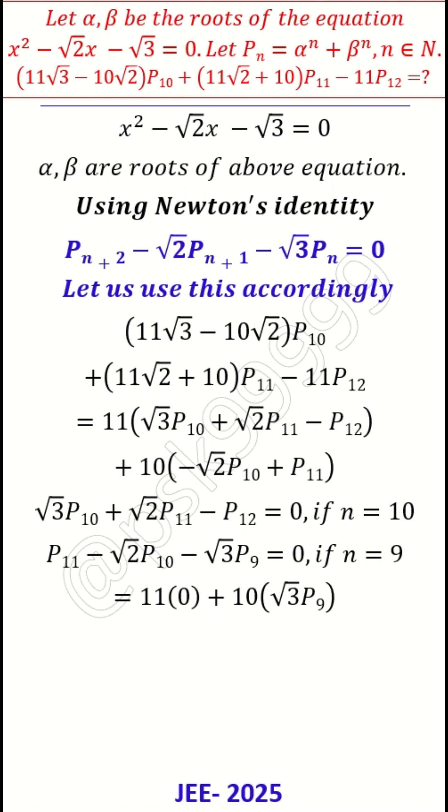I need to take n as 9 in the same Newton's identity. Putting n = 9, it becomes P_11 - √2P_10 - √3P_9 = 0.